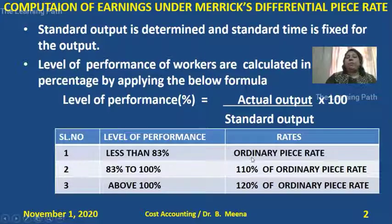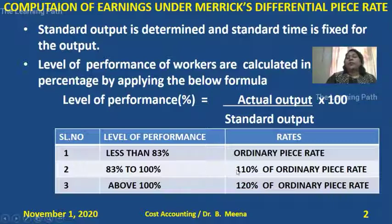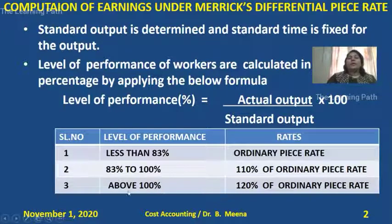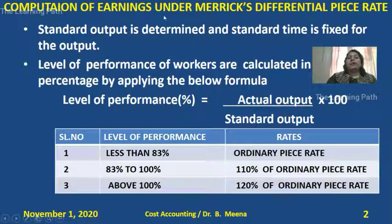If any worker's level of performance is between 83% and 100%, that worker is eligible to get 110% of ordinary piece rate. If any worker's level of performance is more than 100% — 101, 102, and so on — they are eligible to get 120% of ordinary piece rate. This is how to calculate earnings of workers under Merrick's Differential Piece Rate System.